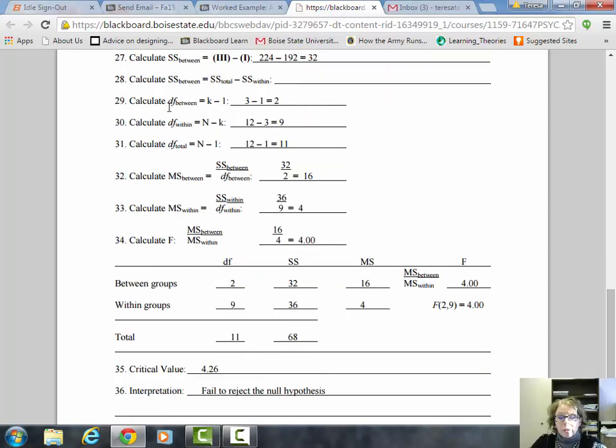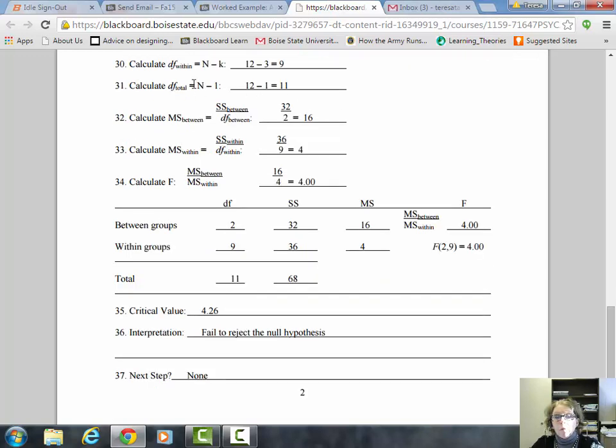Moving down the page, just like we had three ways of calculating sum of squares, there are three ways to calculate degrees of freedom: DF total, DF between, and DF within. K is a new notation unique to ANOVA representing how many treatment groups there are. To calculate DF between, three treatment groups minus one equals 2. For DF within, 12 minus 3 equals 9. For DF total, 12 minus 1 equals 11.